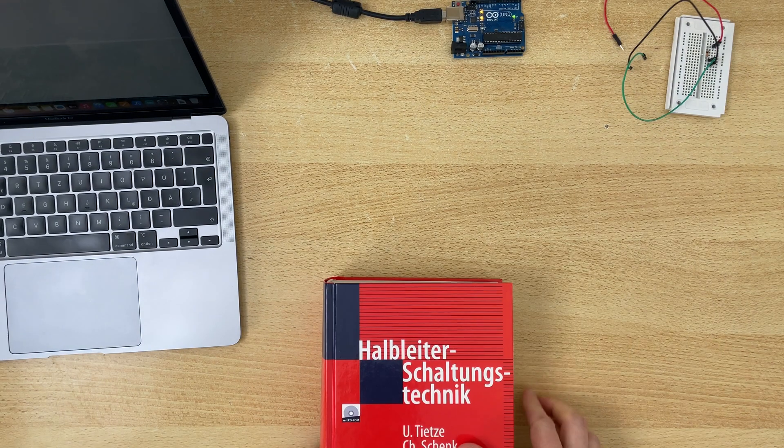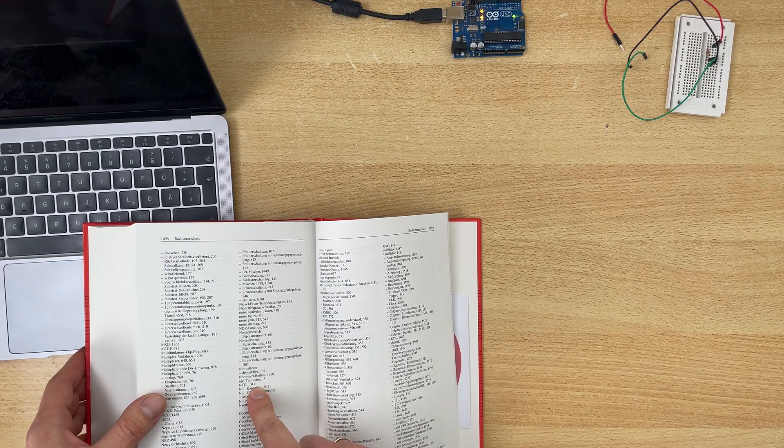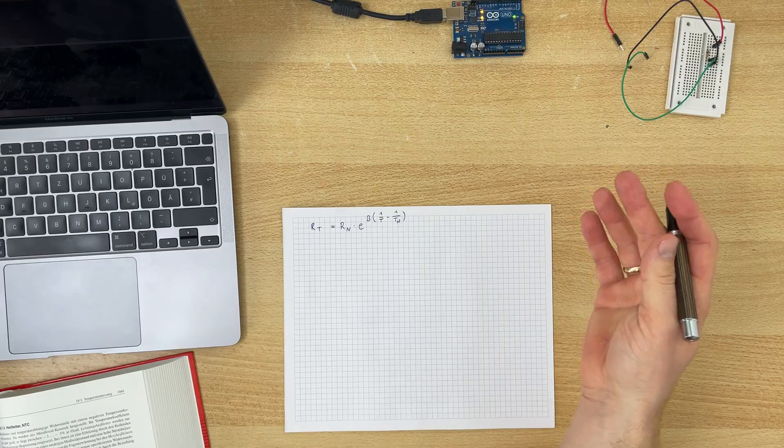An NTC thermistor is a resistor that changes its value depending on the temperature. It's not linear, it has this exponential curve. So the first thing we need is a formula. NTC. Perfect! This is what we need. The formula looks like this.